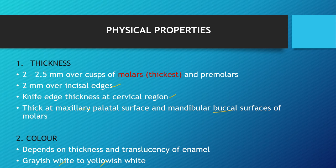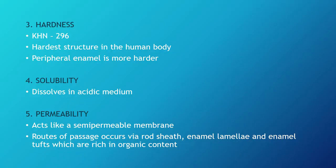Coming to color — it depends on the thickness and translucency of the enamel, ranging from grayish white to yellowish white. Grayish white is when the enamel thickness is more; yellowish white is when the enamel thickness is less. Coming to hardness — the Knoop hardness number (KHN) is 296, and it is the hardest structure in the human body. The peripheral enamel is harder — the outermost layer is more hard. Solubility: it dissolves in acidic medium, so the acid produced by bacteria can dissolve enamel — that's how caries initiation occurs.